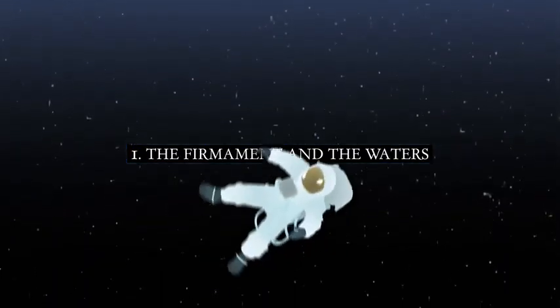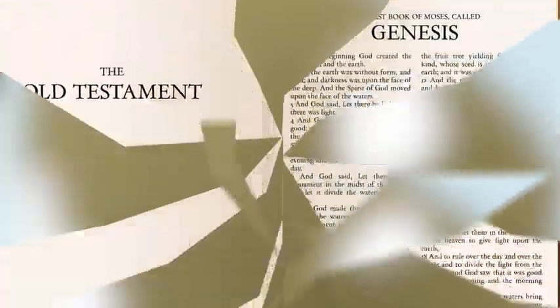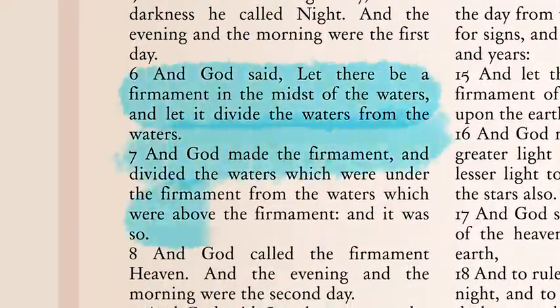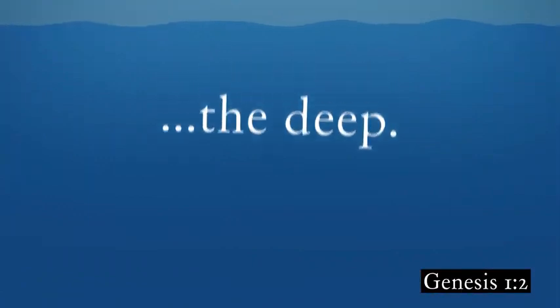1. The firmament and the waters. There is no outer space in the biblical model. The first chapter of Genesis and other scriptures describe our world as being encased within an immeasurable body of waters. These vast waters are referred to as the deep.